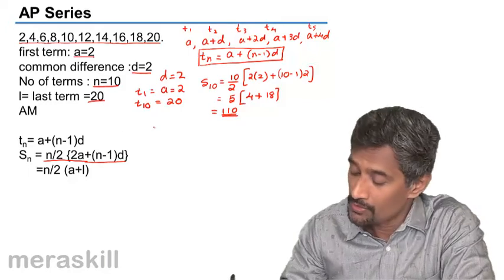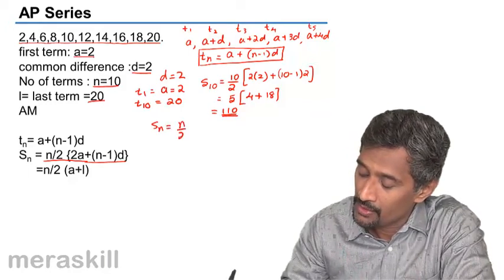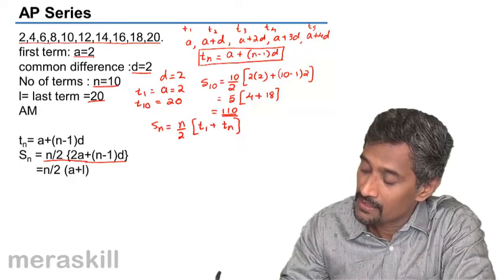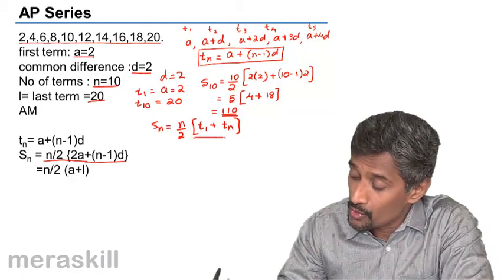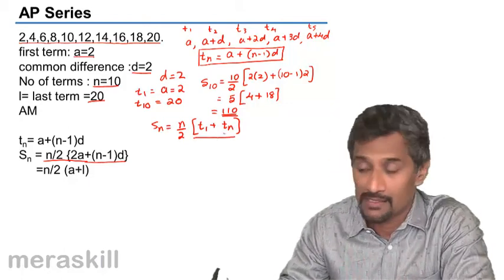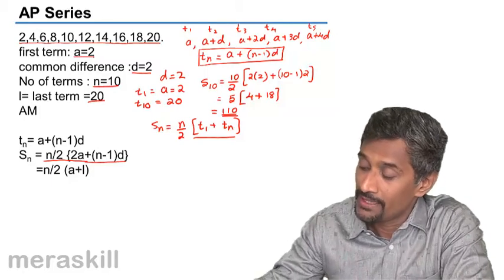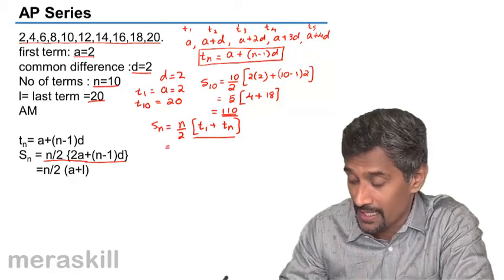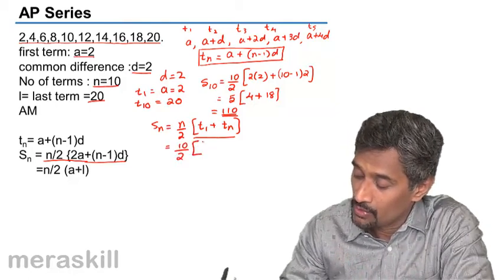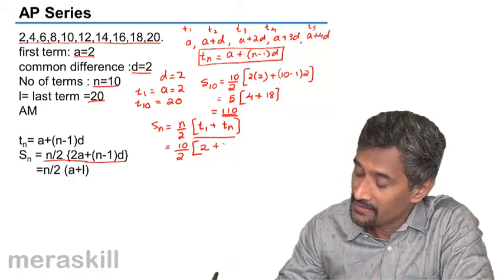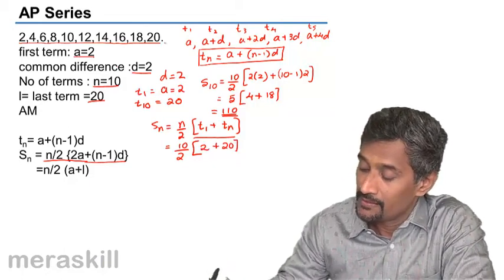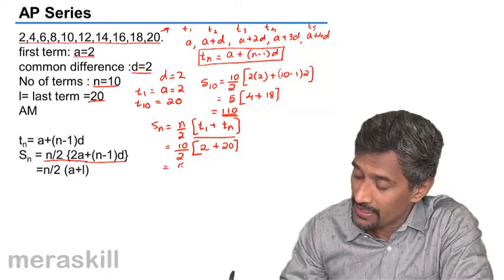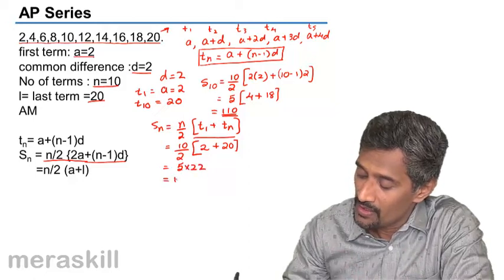There is another formula also, which is Sn is N by 2 into T1 plus Tn. That is the first term plus the last term. But this can be used only if we know the first term and the last term. This can be used even otherwise, whether you know the last term or do not know it. So, let's verify whether this is valid for this. N turns out to be 10, 10 by 2, T1 turns out to be 2 and Tn is 20. The last term is 20, that is T10 and the first term is 2. This again turns out to be 5 into 22, 110.